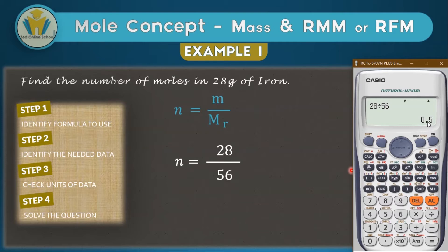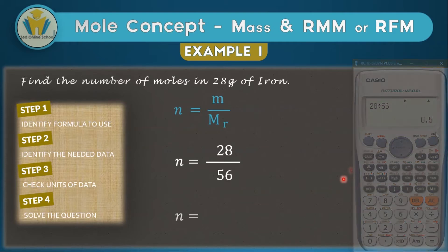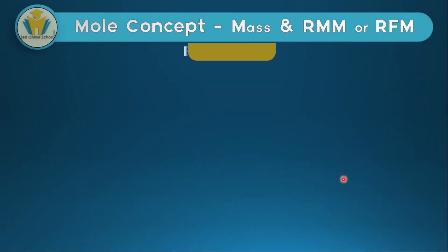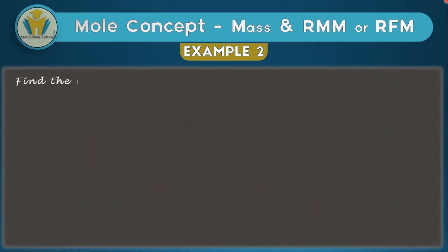The answer is 0.5 moles — it's a very simple process. However, never think the topic of mole concept or stoichiometry will always be this easy, because the relationships between the different formulas can make it a bit more complex. Let's look at example two.